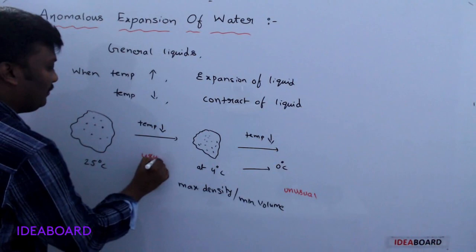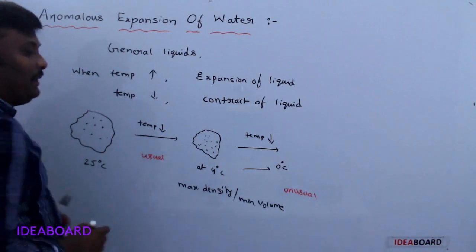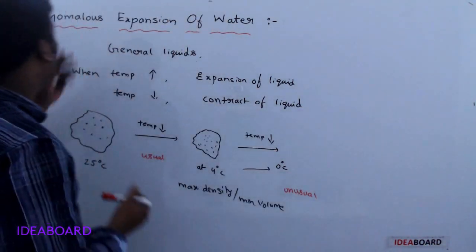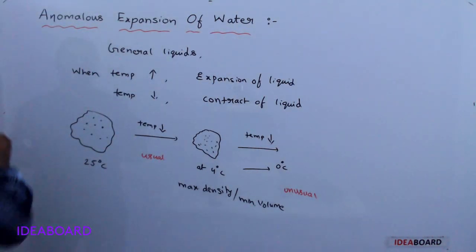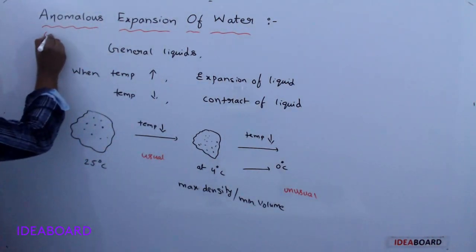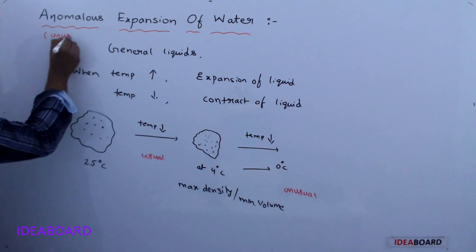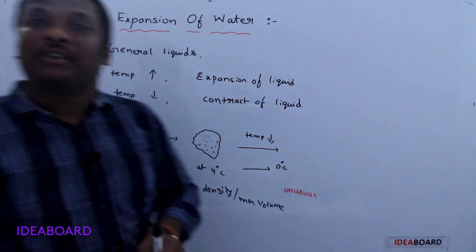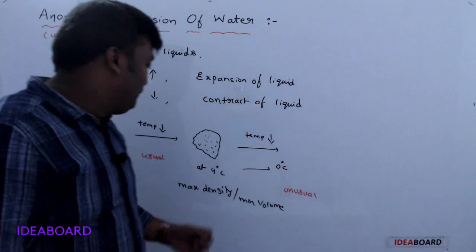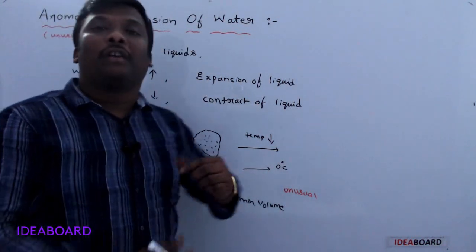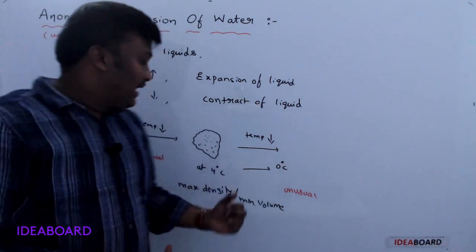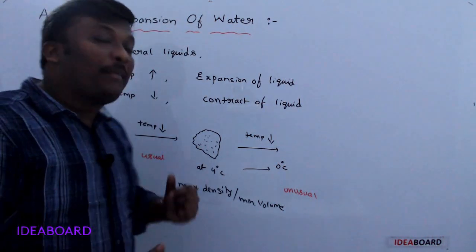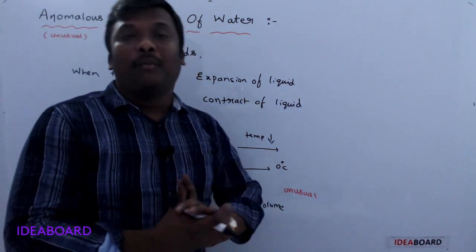This expansion is an unusual thing. This unusual behavior is named anomalous expansion. Anomalous means unusual. This unusual expansion of water takes place exactly at 4 degrees Celsius, because at 4 degrees Celsius water has maximum density or minimum volume.